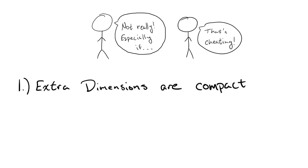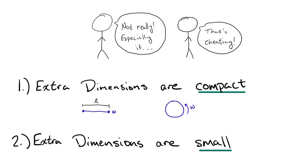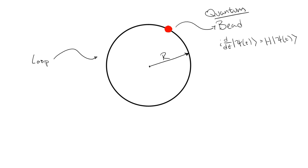They are finite in size, or compact, and they are very small. The simplest example of such a compact dimension to consider is just a circle. So, to see how this works, let's think of a bead on a circular loop. But not just any bead, a quantum bead, meaning the way it evolves with time is described by the Schrödinger equation from quantum mechanics.